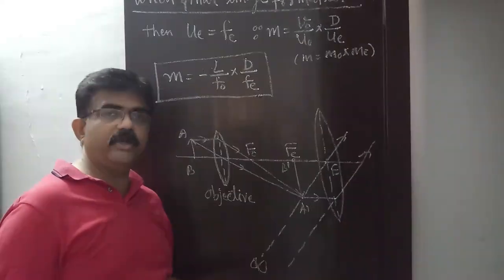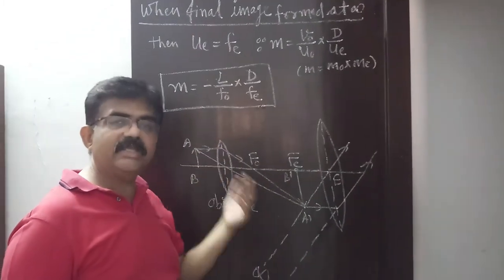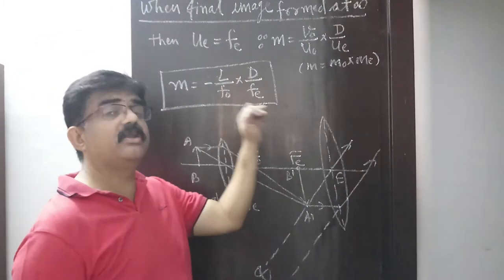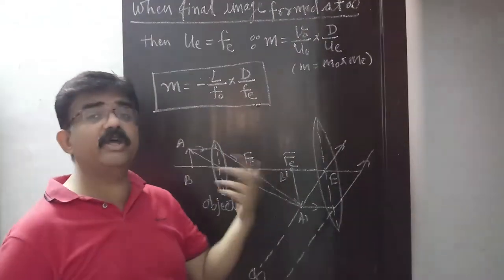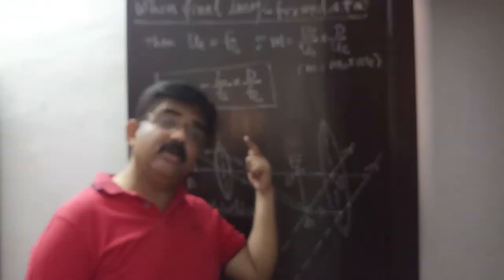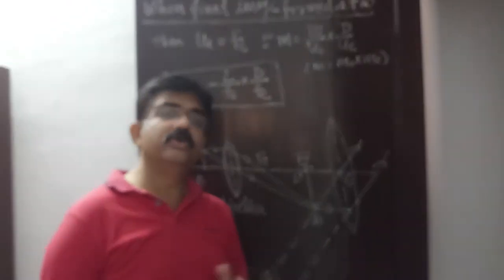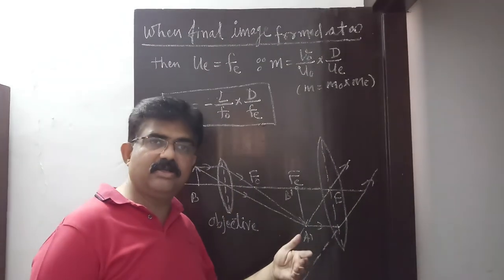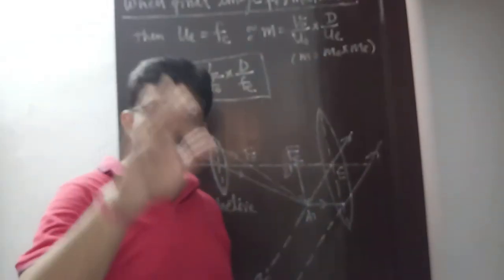Please practice the diagram and the derivation. In the next topic I will teach you the astronomical telescope. It is also asked how the magnifying power is increased — you can see that when FO and FE are very small, the magnifying power will be large. In wave optics, we study the resolving power. I will post the next video on the astronomical telescope. Thank you.